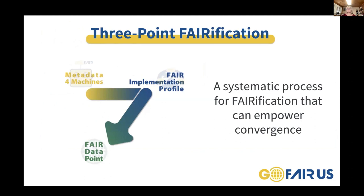A three-point verification network has been developed collectively for essential steps toward verification. The process begins when a community of practice considers its domain-relevant metadata requirements and other policy considerations, and formulates these as machine-actionable metadata components. Getting help reaching consensus on these requirements can be guided in Metadata for Machines workshops. M4M outputs then help guide formation of FAIR Implementation Profiles, which are a collection of FAIR implementation choices made by a community of practice for each of the FAIR principles. Community-specific FIPs can then become captured as FAIR data sets and made openly available to other communities for reuse.